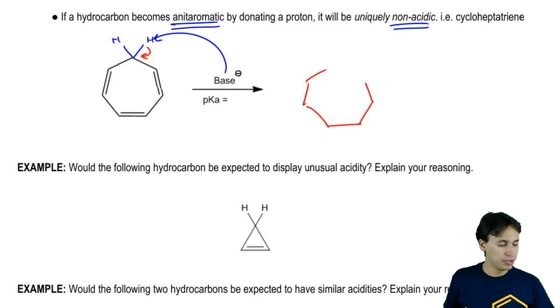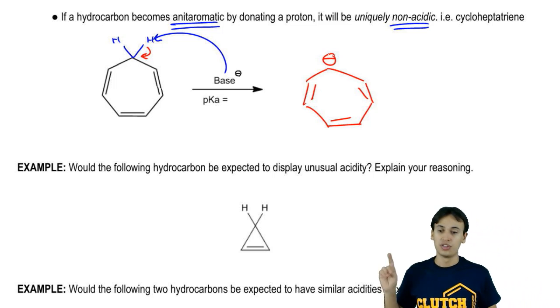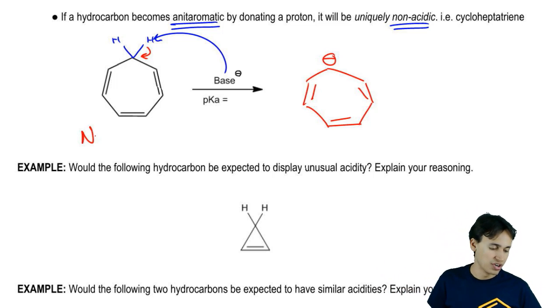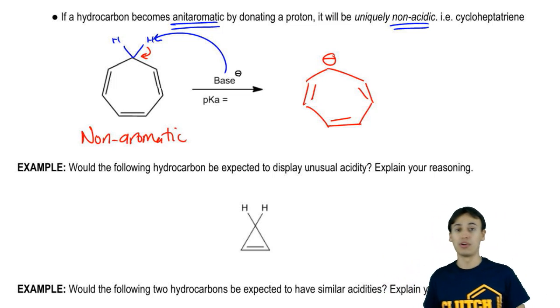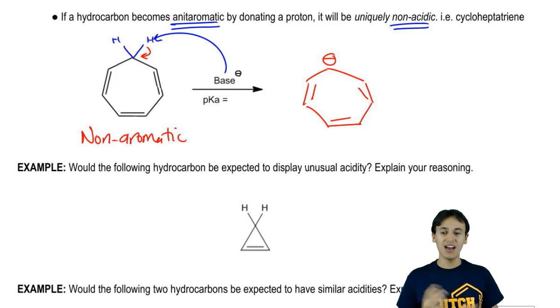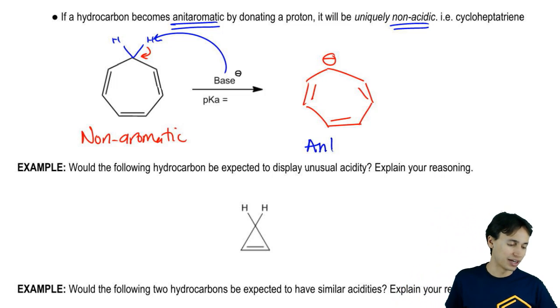It would become negatively charged. I would have double bond, double bond, double bond, negative charge. The original molecule was non-aromatic just like my previous example because it's not fully conjugated. But afterwards, what's the aromaticity of this molecule? This one is forced to become anti-aromatic, which sucks.